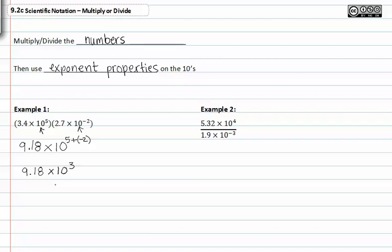Likewise with dividing scientific notation problems, we can take 5.32 and divide it by 1.9. When we divide 5.32 by 1.9, we get 2.8.